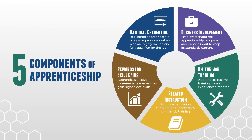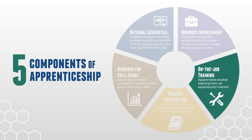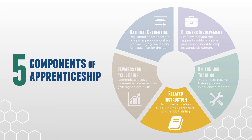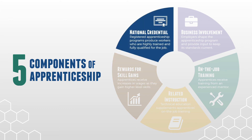Let's review. The five components of apprenticeship ensure that employers have access to a stable pipeline of qualified workers and that apprentices are equipped to work in their industry with the knowledge and skills they need to be successful. Business Involvement: Employers are the foundation of the apprenticeship program and provide input to keep its standards current. On the Job Training: Apprentices receive training from an experienced mentor while doing the work. Related Instruction: Technical education supplements apprentices' on-the-job training in the classroom, the workplace, or online. Rewards for Skill Gains: Apprentices receive increases in wages as they gain higher-level skills, incentivizing their advancement as they become more valuable to industry employers. National Credential: Registered apprenticeship programs produce workers who are highly trained and fully qualified for the job. Upon completion, the worker is ready to advance their career and be an asset to employers regardless of location.